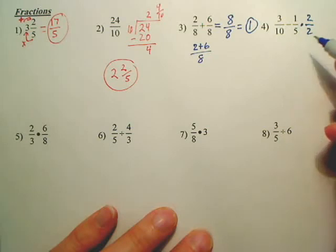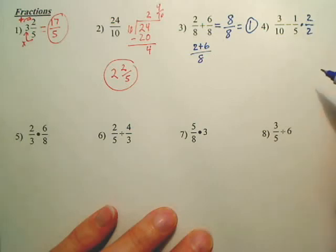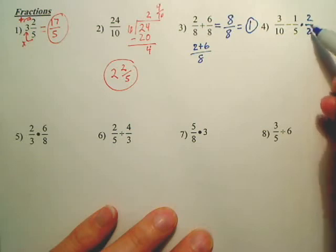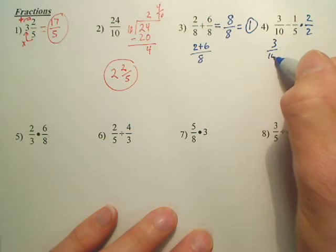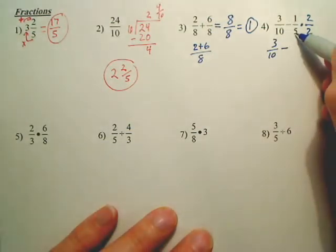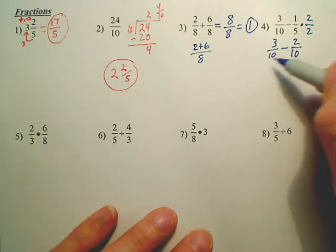What's 1 times 8? What's 1 times 12? So if I multiply 1 fifth by 1, am I changing its value? No. I'm changing the number, but I'm not changing the value. So again, why did I choose 2 over 2? Because I wanted both denominators to be the same. So we end up with something like this. 3 tenths minus, what's 5 times 2? 10. And what's 1 times 2? 2. So I had to change the second one so they had the same bottom.